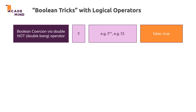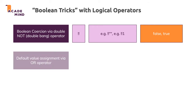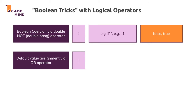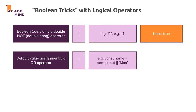Another nice trick is related to how JavaScript works with the OR operator. You can use it to assign a default value to a constant or variable. This will check some input — imagine that some input is another variable holding user input that might be empty. An empty string is a falsy value, treated as false. The way JavaScript works with the OR operator is that it looks at the thing in front of the OR operator, and if that is false, it also looks at the value after the OR operator, because it returns true overall if at least one of the two values is true.